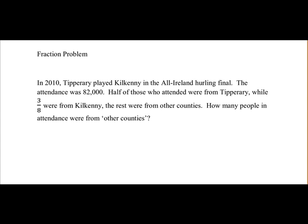So if we analyse the question, we know from it that half were from Tipperary, three-eighths were from Kilkenny, and whatever is left over were from other counties. So if we just put together the half and three-eighths and see how much we have.